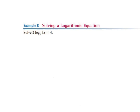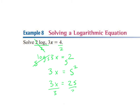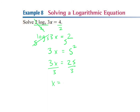For example 8, we're solving a logarithmic equation. We want to get our log all by itself, so we divide both sides by 2, giving us log base 5 of 3x equals 2. Anytime we just have a log on one side, we raise the base — which is 5 here — on both sides. So 5 to the log base 5 of 3x equals 5 squared. The 5 and log base 5 cancel, leaving 3x equals 25. Dividing both sides by 3 gives x equals 8.33.